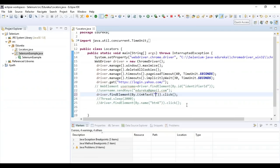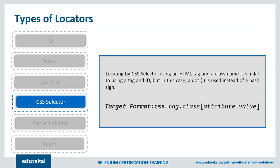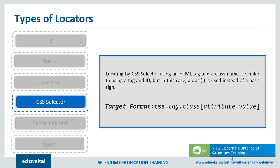Now let's understand the CSS locator. CSS is mainly used to provide style rules for web pages, but we can also use it to identify one or more elements on the web page. If you start using CSS selectors, you will love the speed compared to XPath, and CSS selectors can also make scripts run at the same speed in Internet Explorer. CSS selector is the best possible way to locate complex elements on a web page.